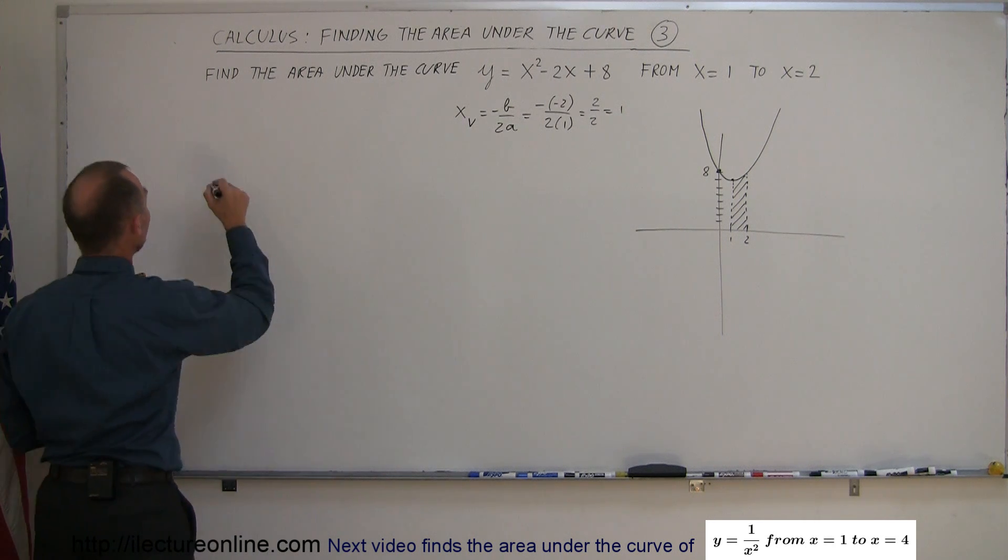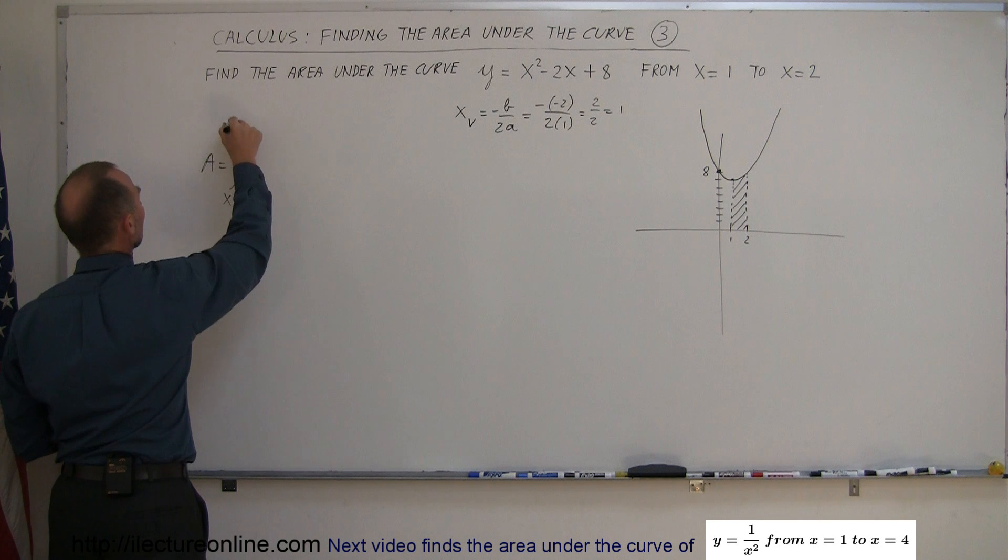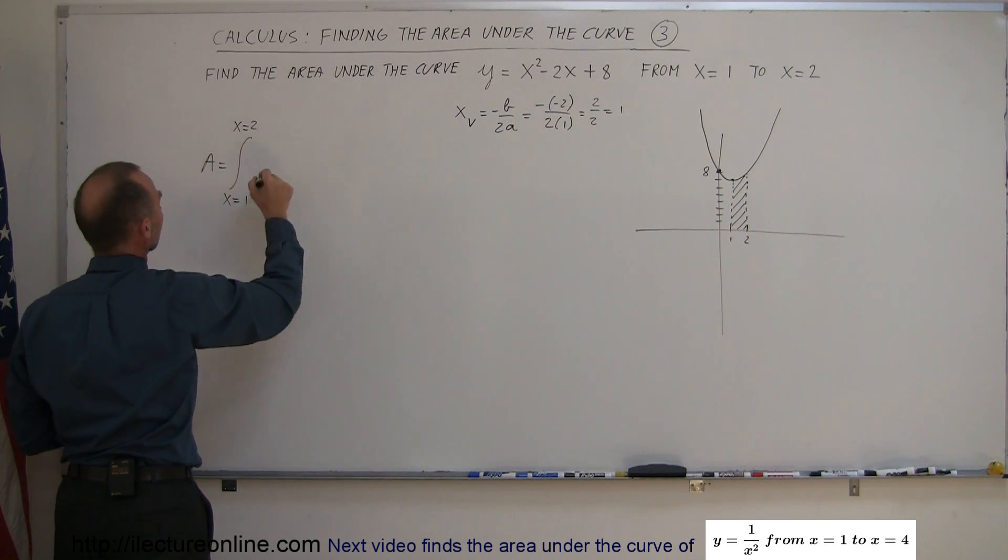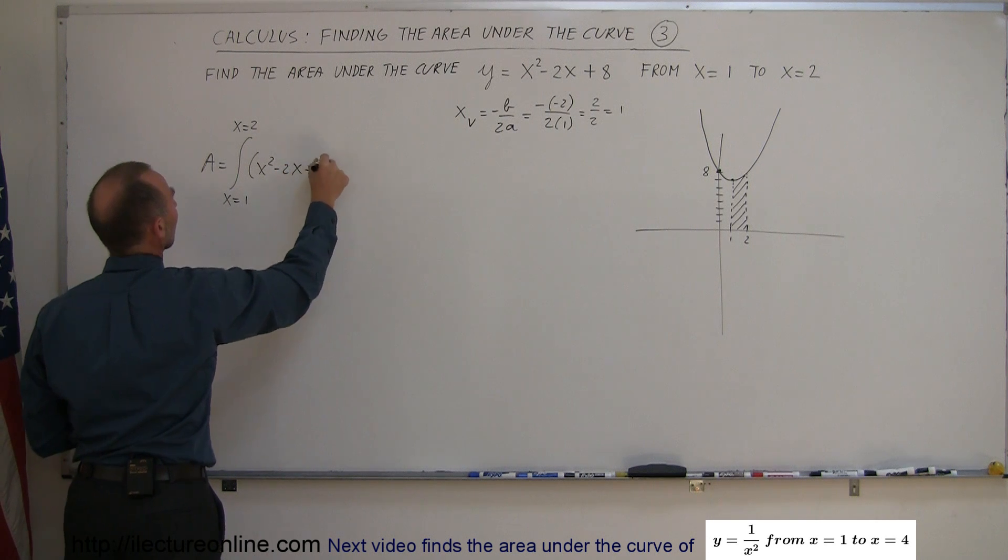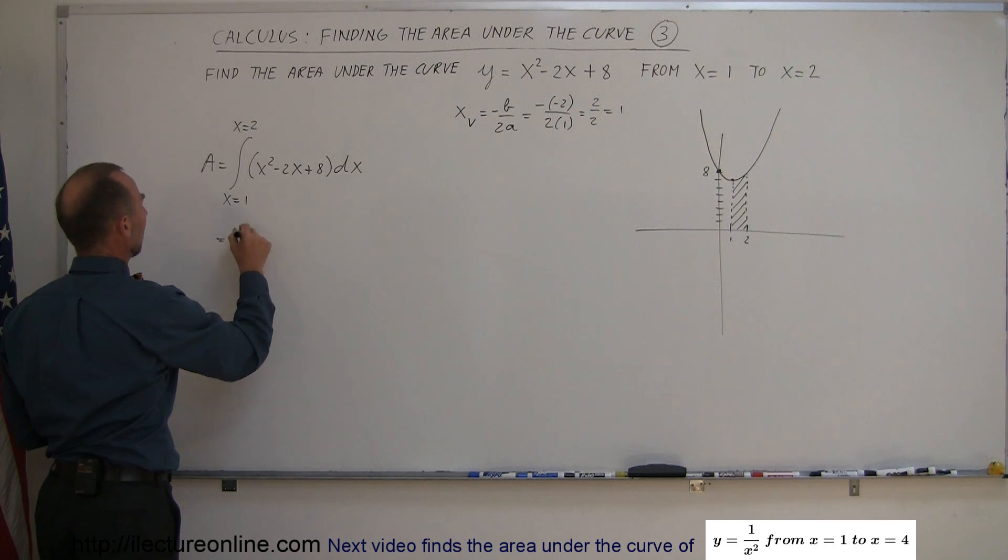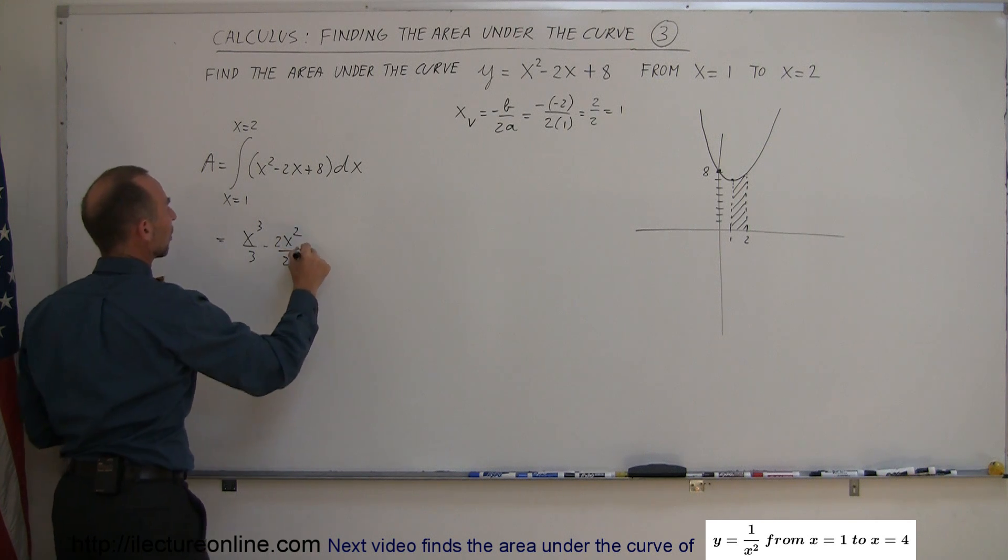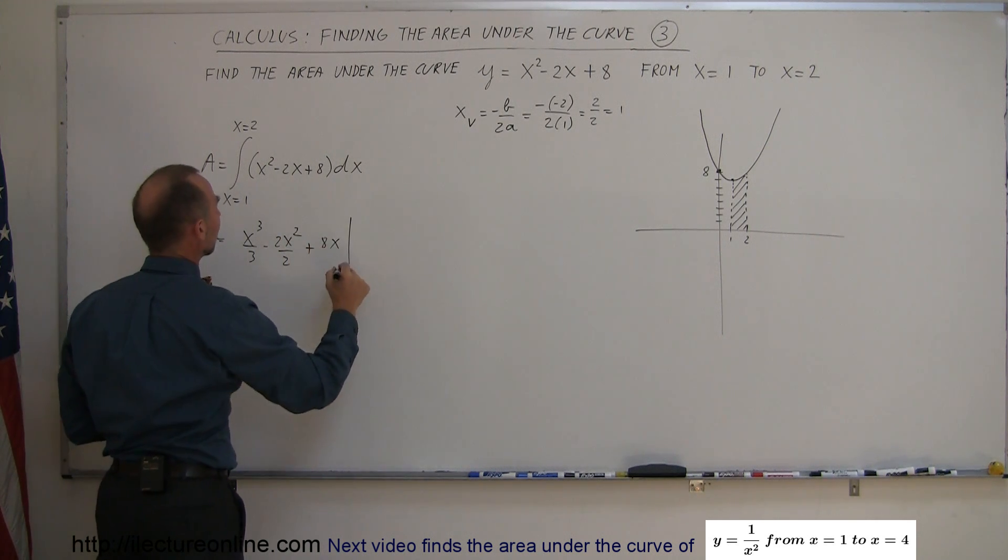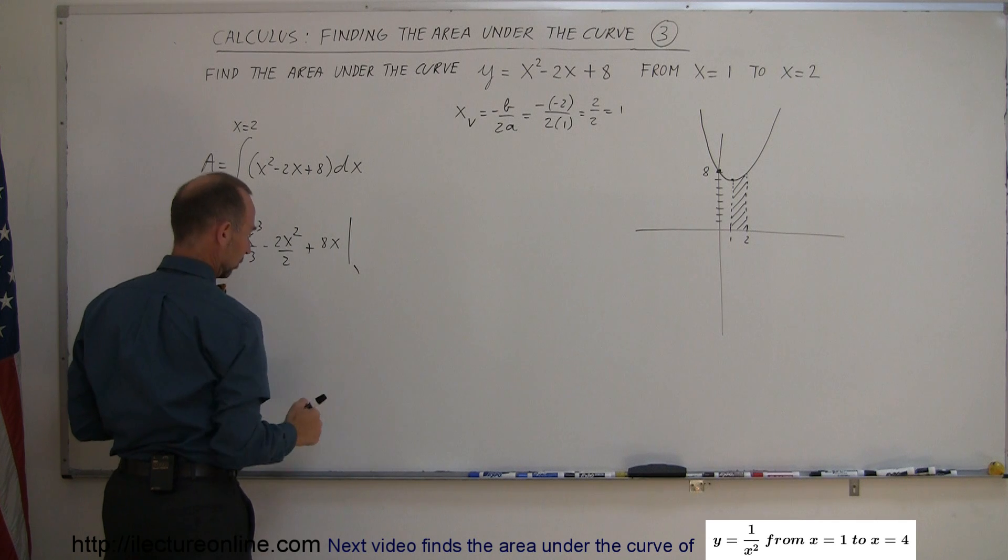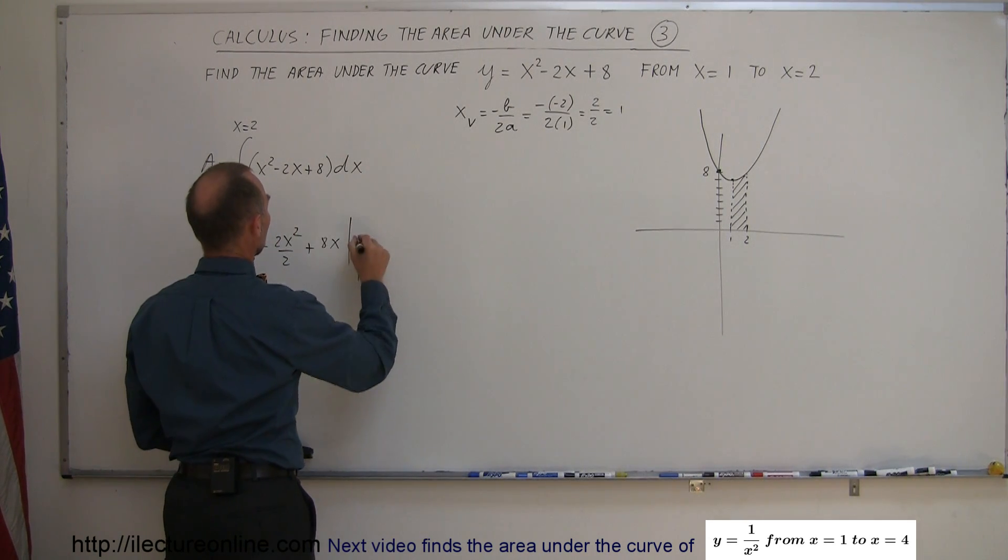The area under the curve is equal to the integral from x equals 1 to x equals 2 of the function, which is x squared minus 2x plus 8 times dx. That is fairly easy to integrate. This equals x cubed over 3 minus 2x squared over 2 plus 8x, and evaluate it from 1 to 2.